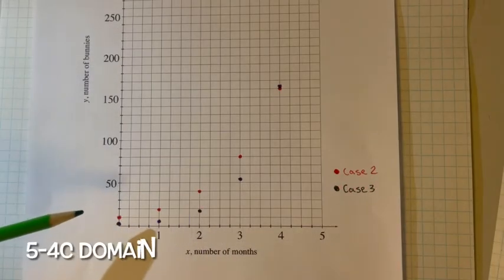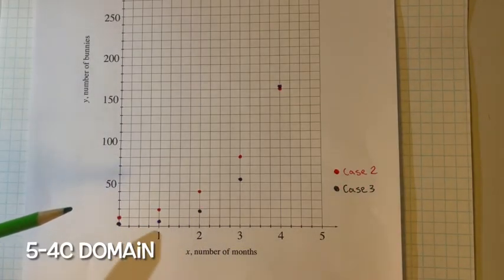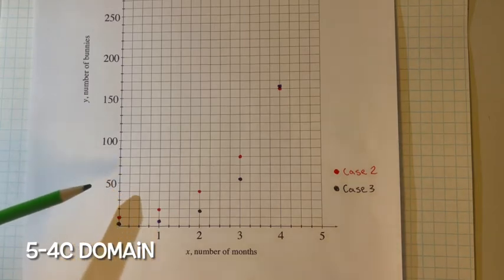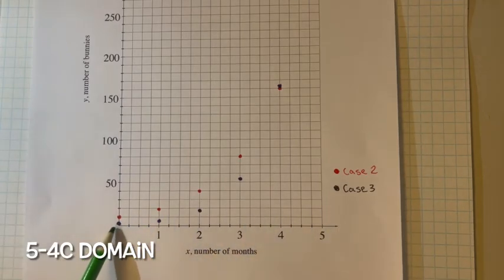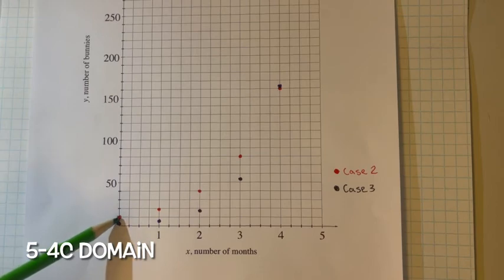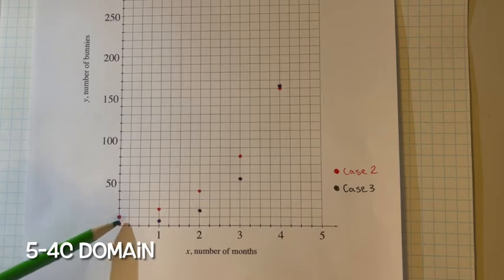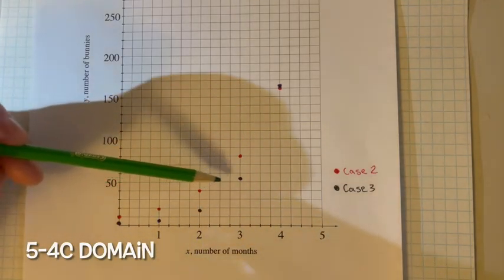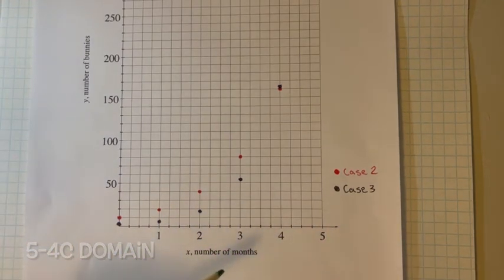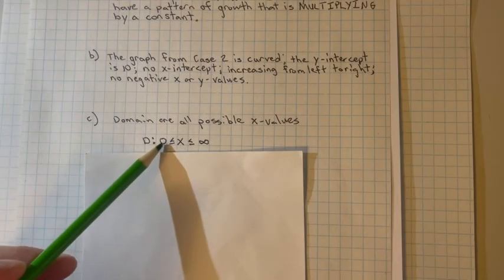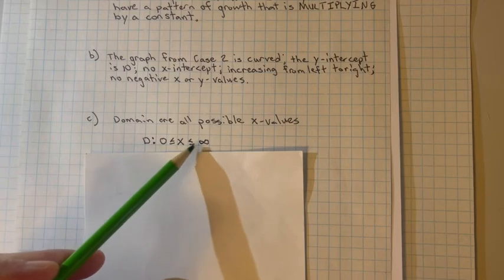For 5-4c, we need to find the domain and range of the graph from case 2. Domain are all the possible x values. If we look at the x values, it starts at zero. So the x value is greater than or equal to zero and increases, and it can go on infinitely for the number of months. So the domain is greater than or equal to zero and less than or equal to infinity.